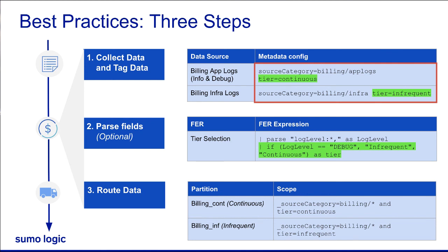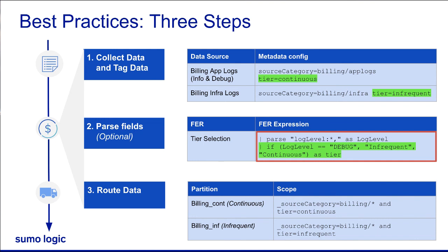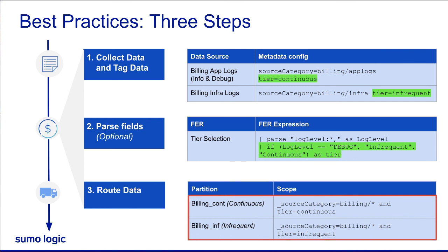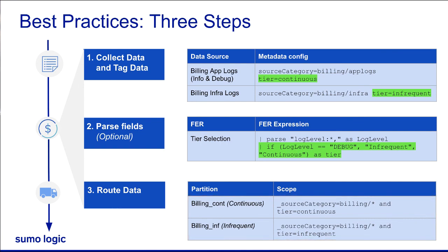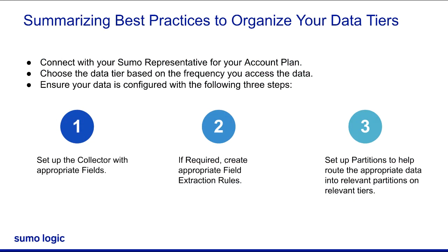So in this example, I'll collect the app logs and infra logs first. I am assigning the billing service data to billing/app-logs and billing/infra. I don't want to send all the application logs to continuous, so I'm going to build a field extraction rule to pull out the log level from the ops logs. If it's a debug log, I want them to go to infrequent tier, otherwise continuous. The next step is to route data using source category for the assigned partition. You can see how that all ties together in our routing expression down here. I have summarized all the steps here. This helps understand how to organize data in different tiers in Sumo Logic. Thanks for sharing these best practices.